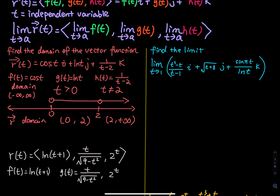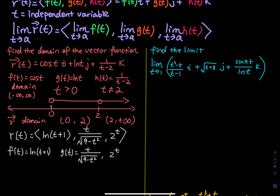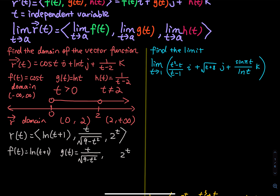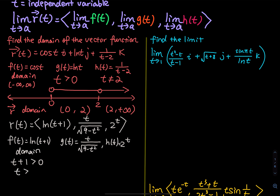Moving on to the next vector function. We have three components: an ln function, a rational function, and an exponential function — corresponding to f(t), g(t), and h(t). For ln, everything inside the parenthesis must be greater than 0, so t must be greater than negative 1. For the exponential function, the domain is negative infinity to positive infinity — no restrictions at all.